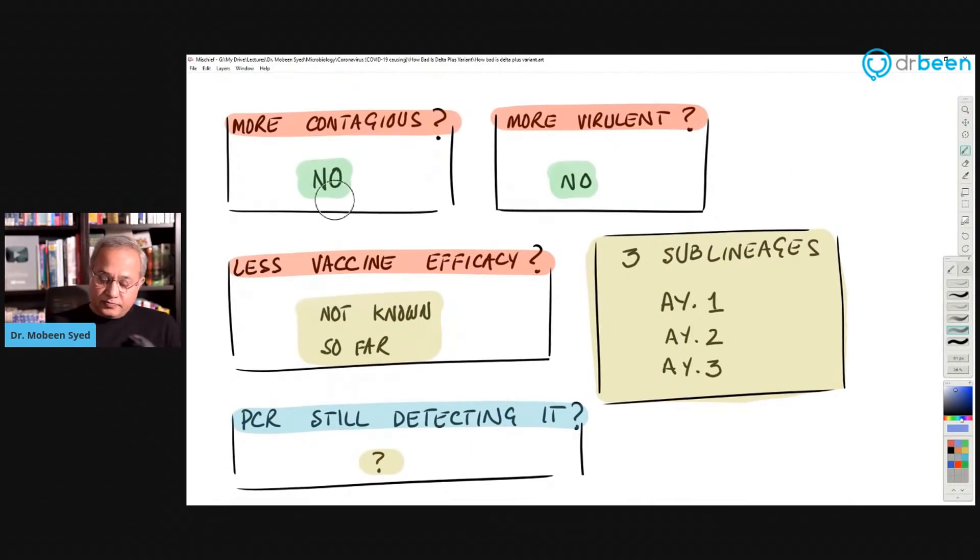So is it more contagious? No. Is it more virulent? No. Has it reduced vaccine efficacy? Not known so far. However, the study that I shared with you, they say that we do not see any significant change. So there may be more data as we see. There are three sub-lineages, AY1, 2, and 3. And then has the testing system become defeated? Meaning there is a change, is there a change on the spike protein that makes the testing systems not recognize the spike protein and fail. So most of the time, the testing system do not only work with the spike protein. They also look at other areas of the virus. That is why most of them are still working correctly.